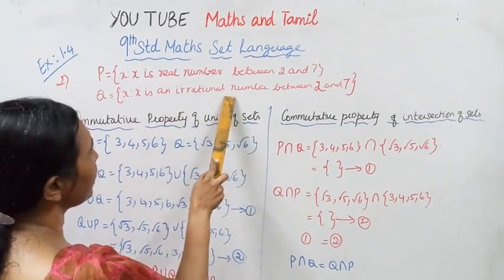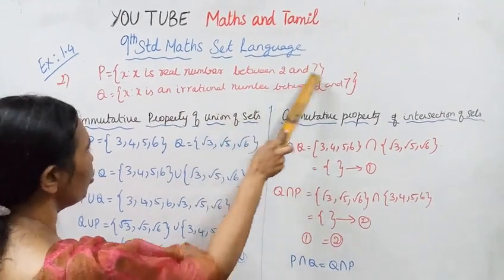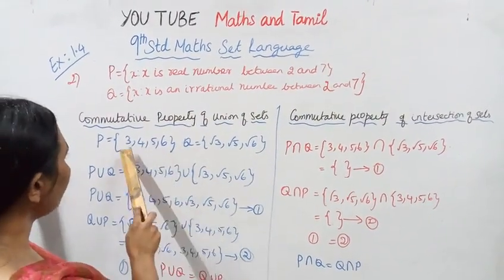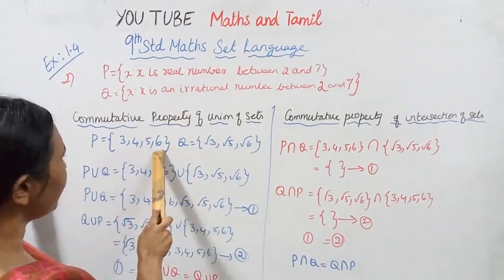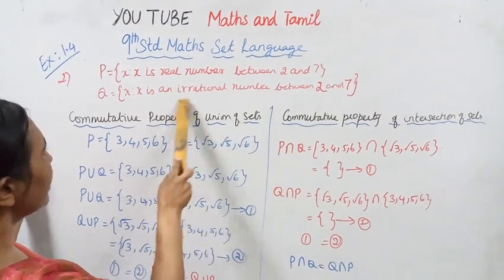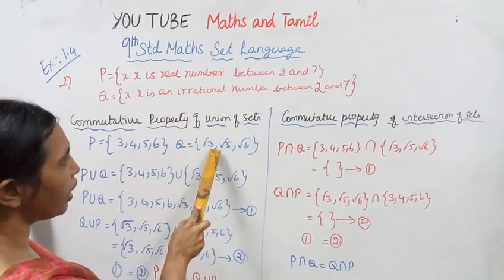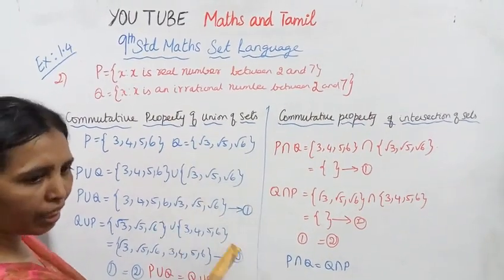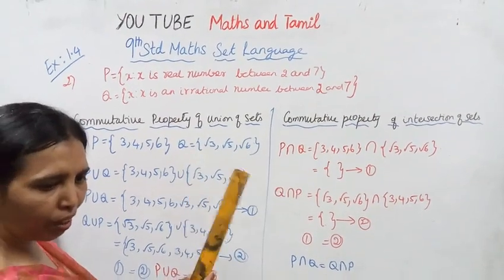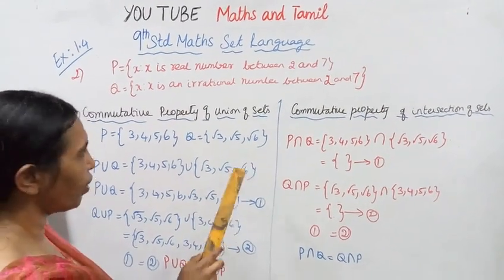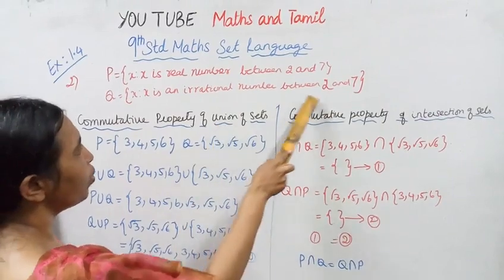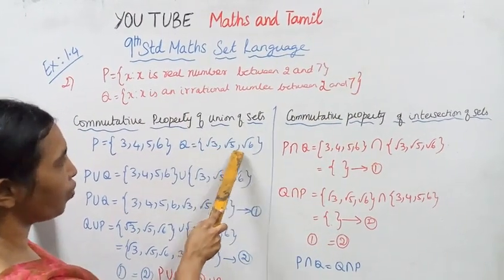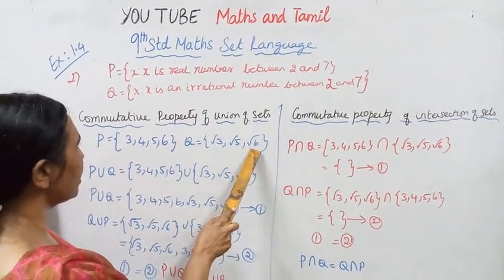Real numbers between 2 and 7: P is {3, 4, 5, 6}. Irrational numbers between 2 and 7: Q is {√3, √5, √6}. Note that √4 equals 2, so it is not irrational, and 2 and 7 are the boundaries, so the irrational numbers are √3, √5, and √6.